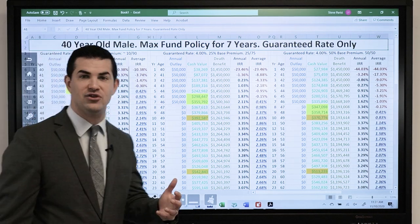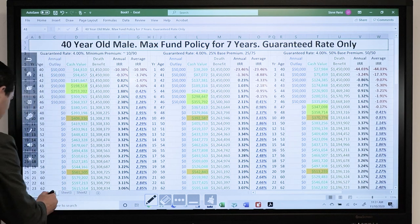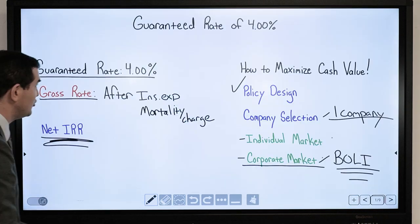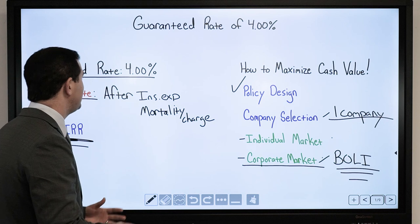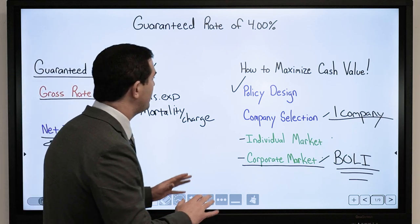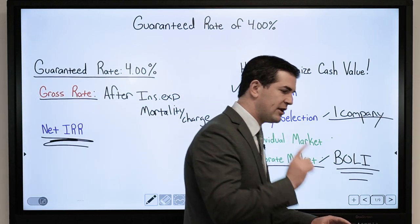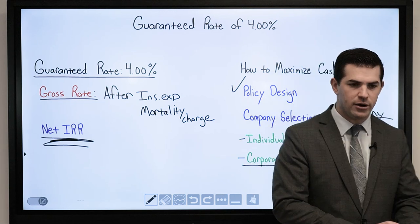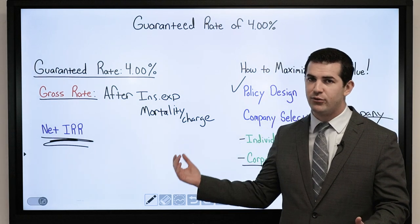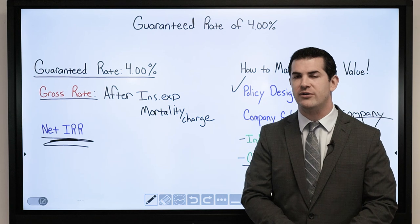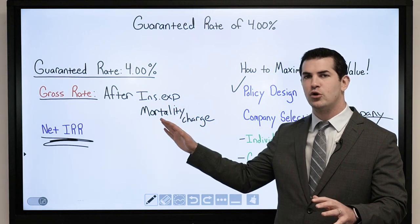Hopefully you found it valuable. But when looking at the guarantees, here are the key points: remember that it is a gross rate — I am not earning 4% on my cash value. That's why we went through all that detail with the actual internal rate of return. Look at the internal rate of return.